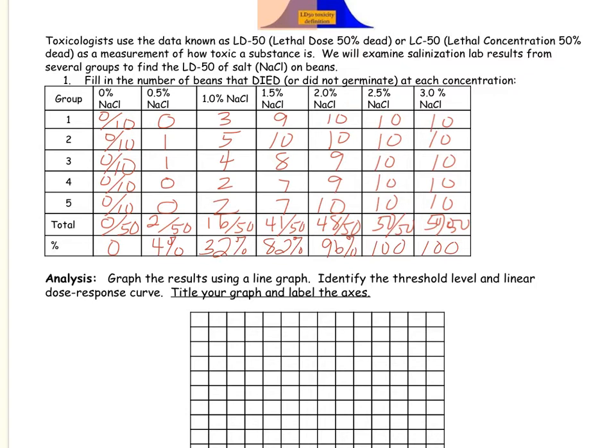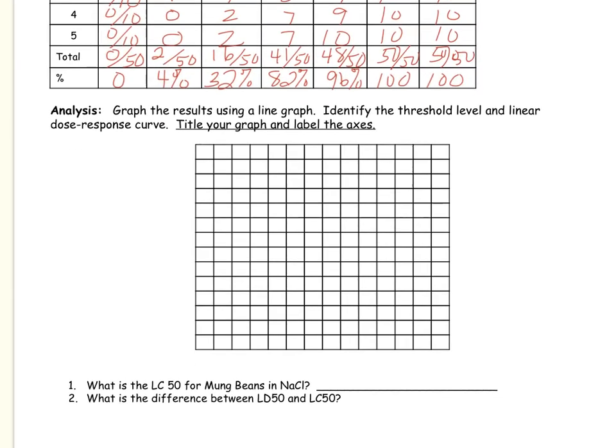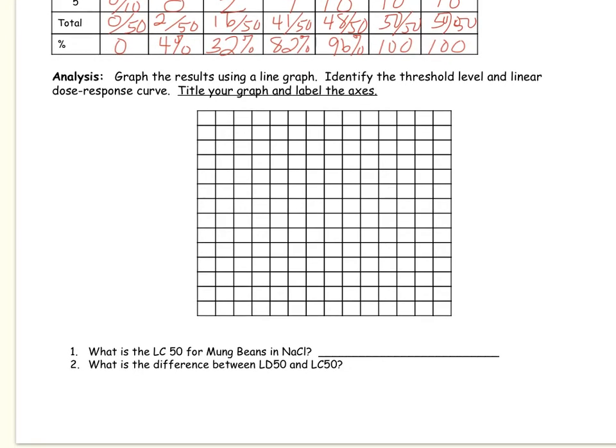You can see here that there's no number that equals 50%, so how do we find our 50% dead? This is a skill you need to know on the AP test. There have been previous FRQs that have asked students to add and then graph the results and find the LD50 or LC50. There are also released AP exams that expect you to be able to read an LD or LC50 graph as well.